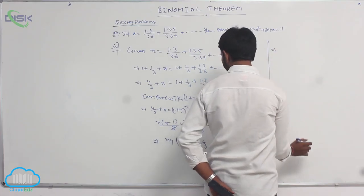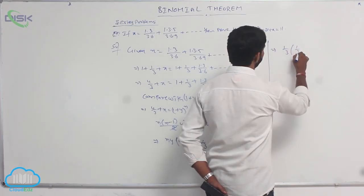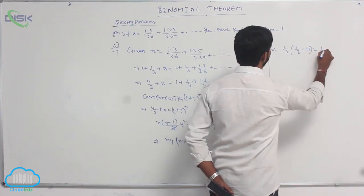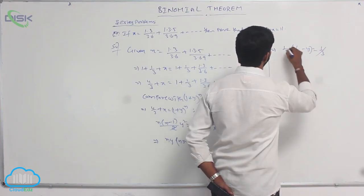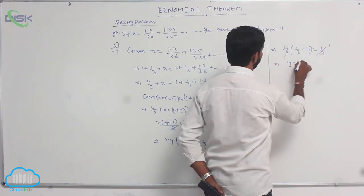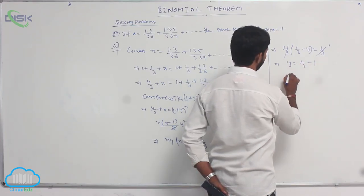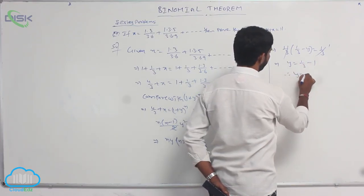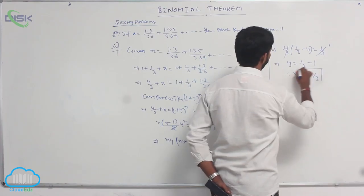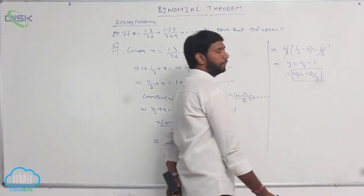Substituting the value of ny, it is (1/3)(1/3 − y) = 1/3. Here 1/3 gets cancelled, so −y = 1/3 − 1. Therefore y = −2/3.